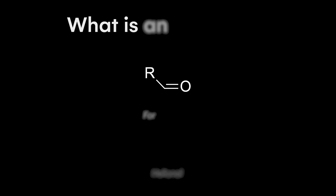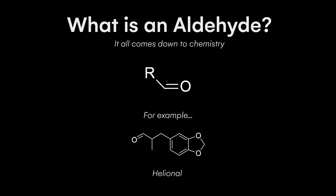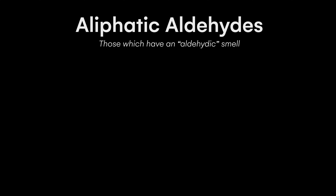So what technically constitutes an aldehyde? It's really quite simple. If you look at the molecule, an aldehyde occurs when you have some kind of carbon skeleton, and specifically on the end of that carbon skeleton you have to have an oxygen double bonded to it, as well as a hydrogen on the side. When people usually talk about aldehydes in perfumery, they're referring to a very specific subset — the aliphatic or straight chain aldehydes — where the carbon skeleton is simply a straight chain of carbon atoms, with the aldehyde group on one of the terminal ends.